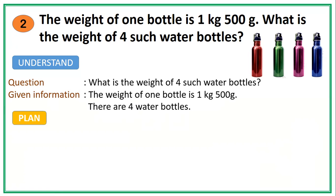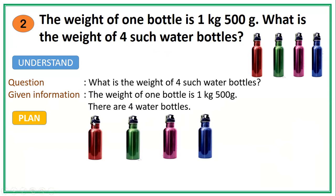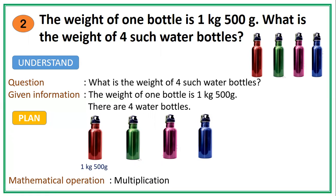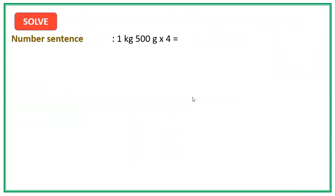Now let us plan. We have four water bottles, and one water bottle is 1 kilogram and 500 grams. We need to find the total weight of four such water bottles, so the appropriate mathematical operation to be used is multiplication. Our number sentence will be: 1 kilogram and 500 grams multiplied by 4 is equal to blank.